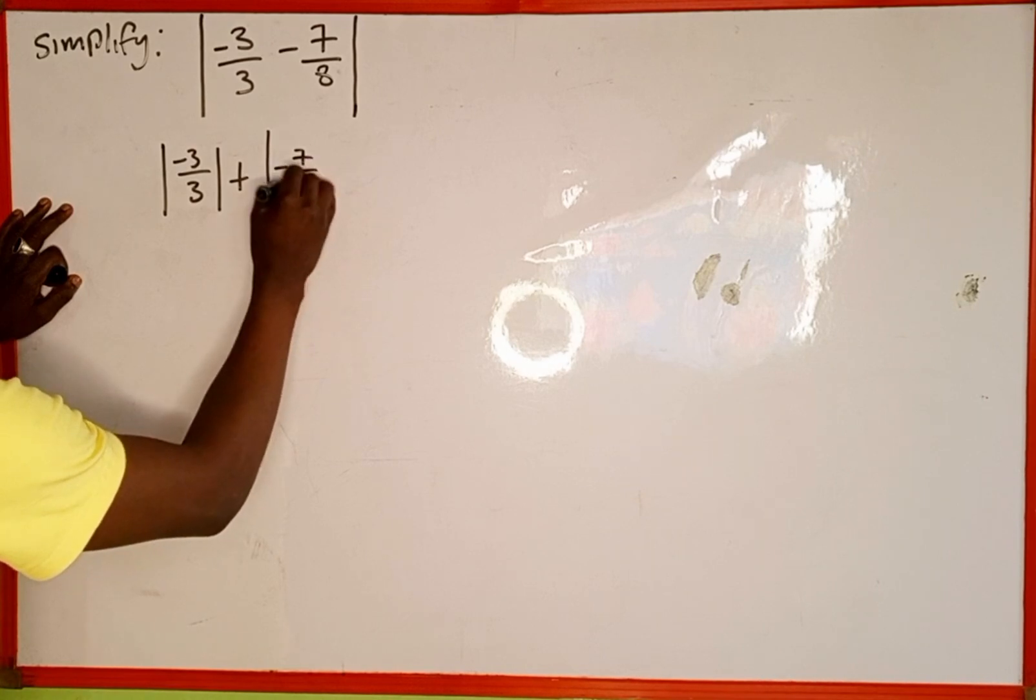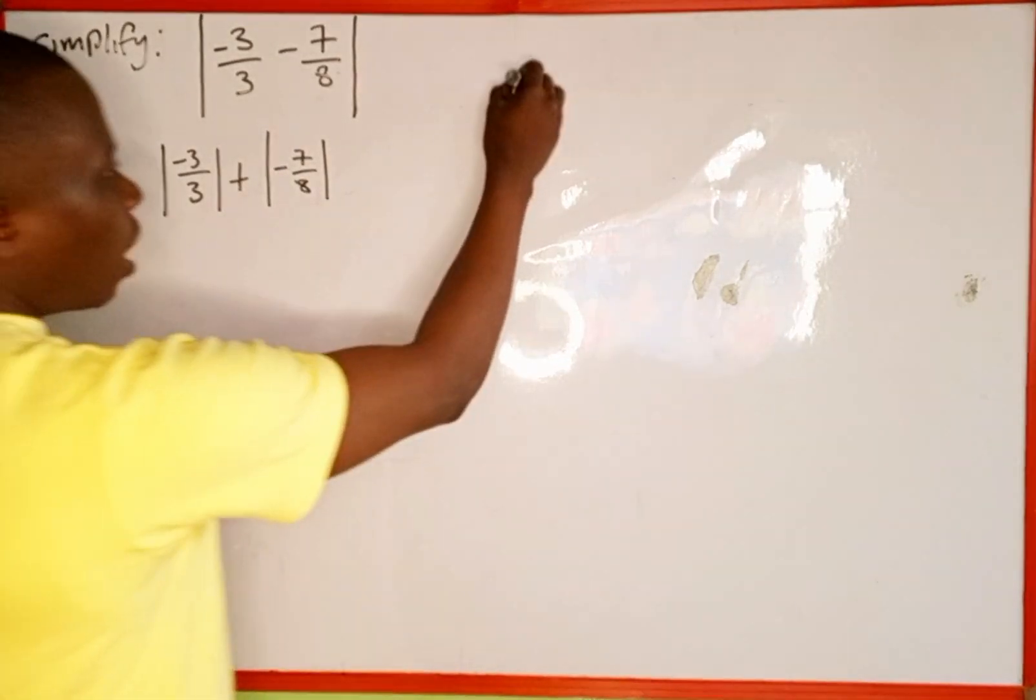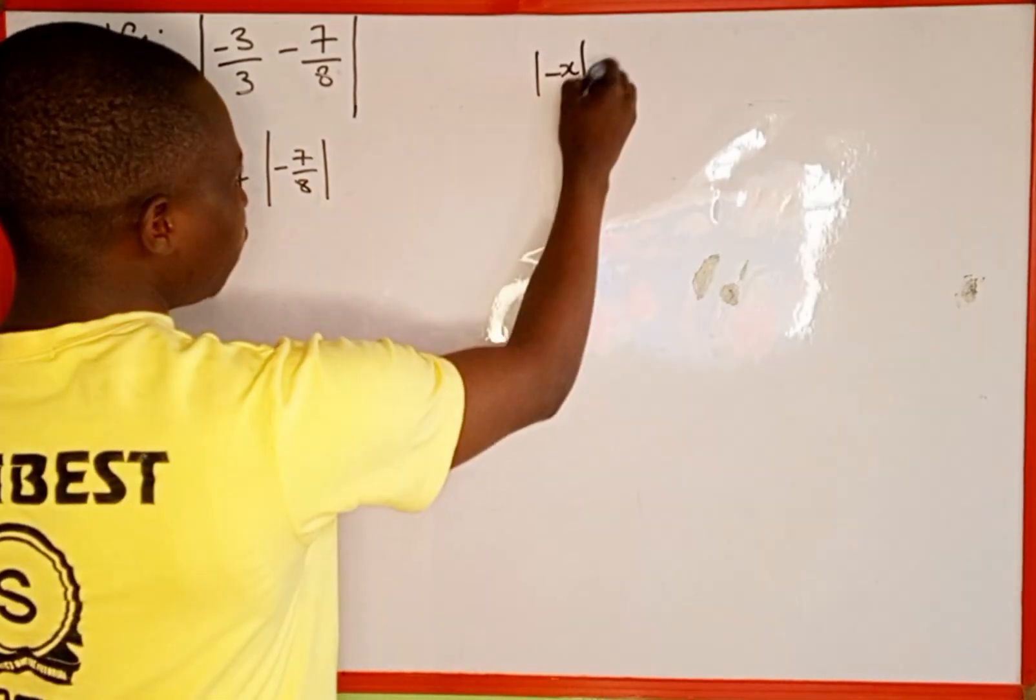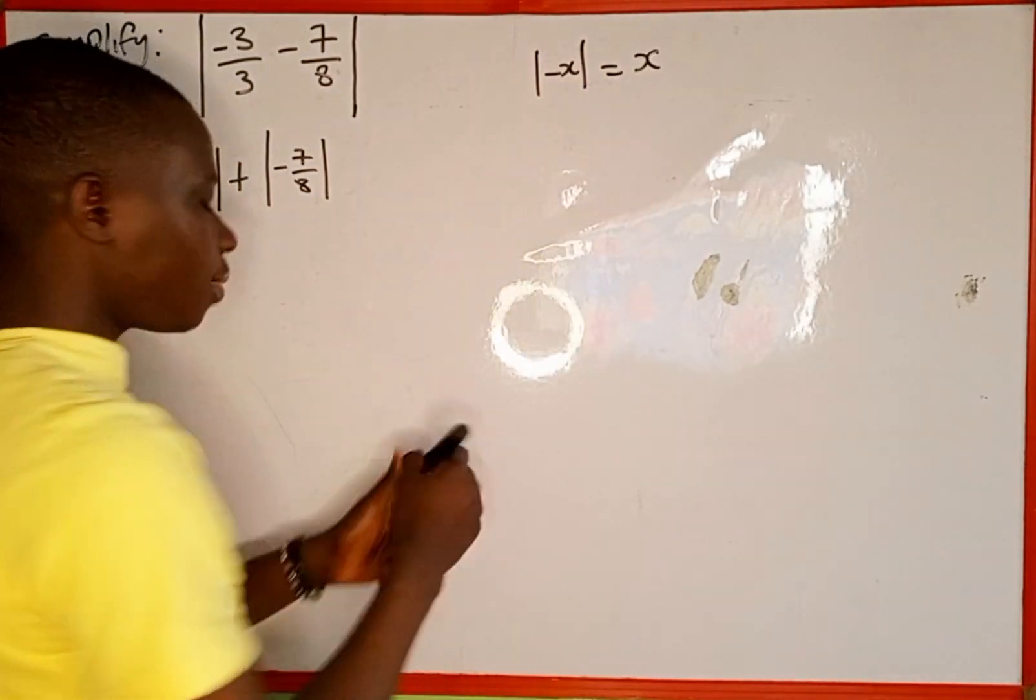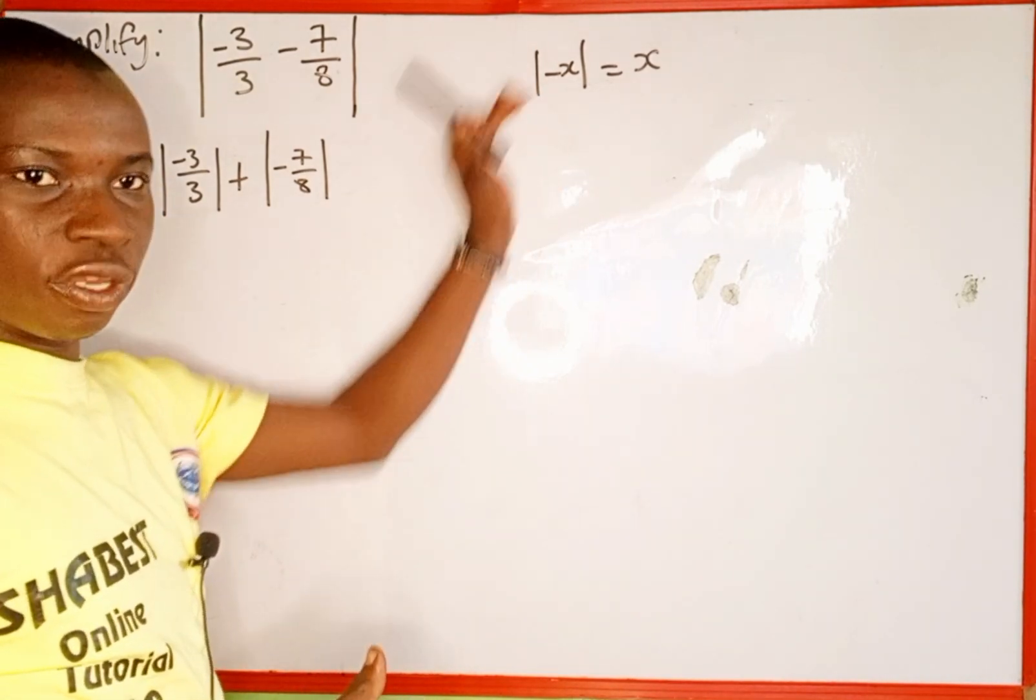And recall, when you have absolute value of negative x, it is the same as x. Absolute value of a negative number or variable is going to be the positive of that number.